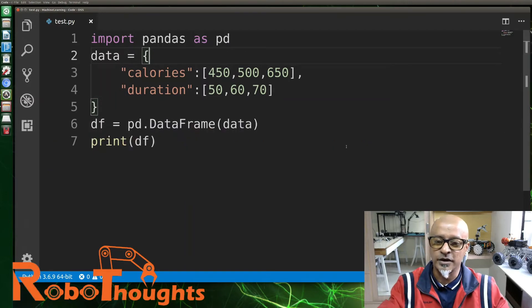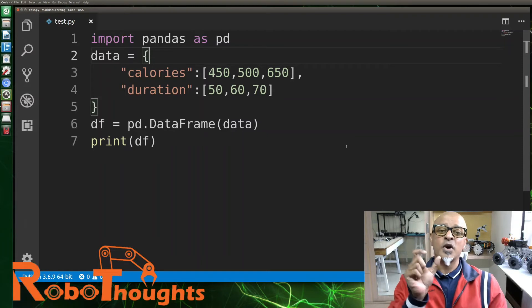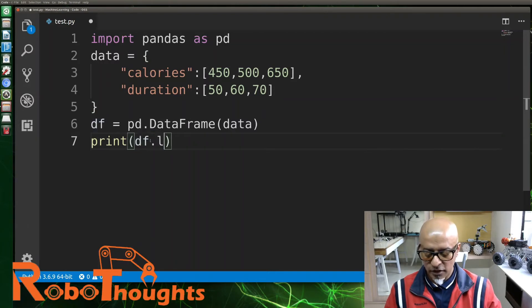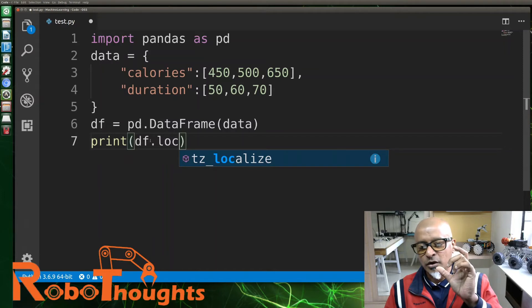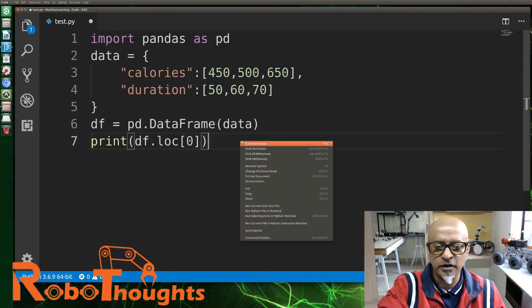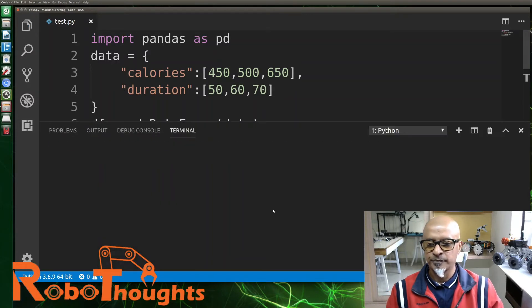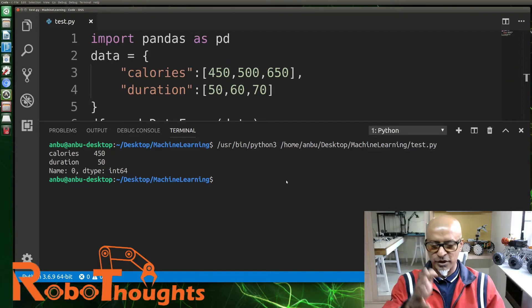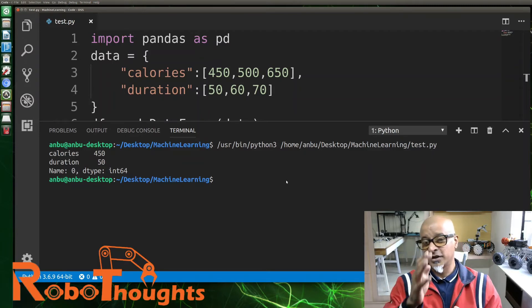Now, by using this loc function or method, how can we access one particular item within the DataFrame? All you need to do when giving a print command is df.loc and you set from which location you want to access. You need to put a square bracket and say, let's access zero. Let's run this program. You can see calories 450—the calories row got the first location which is 450, that's your zero index. The duration is 50, again at index zero, and the data type is int64.